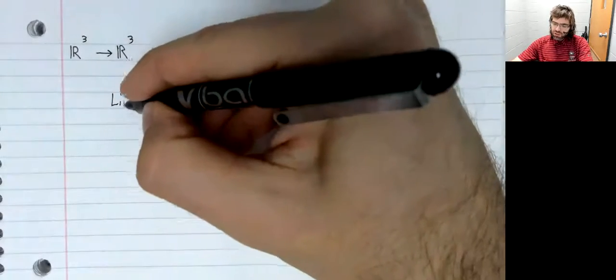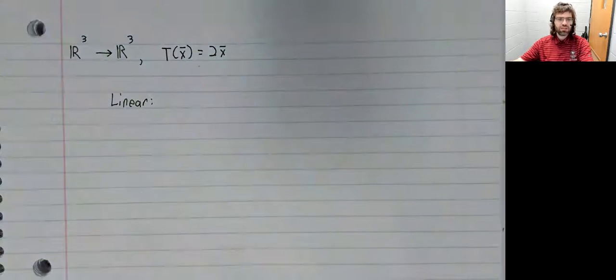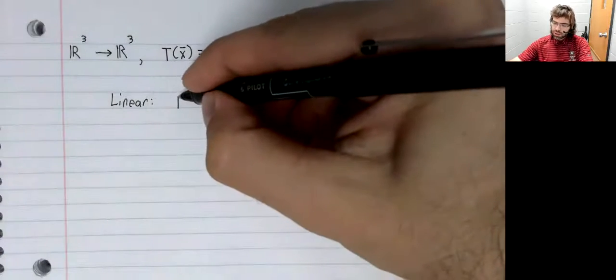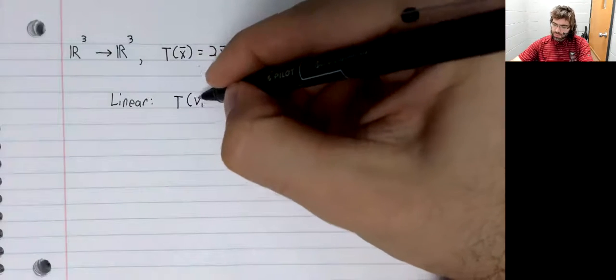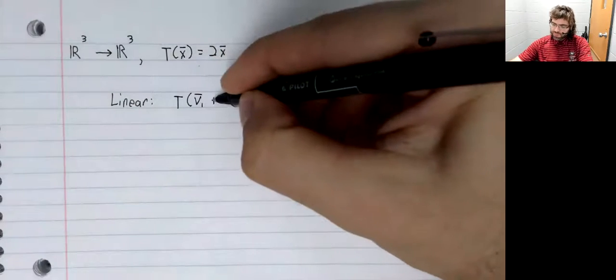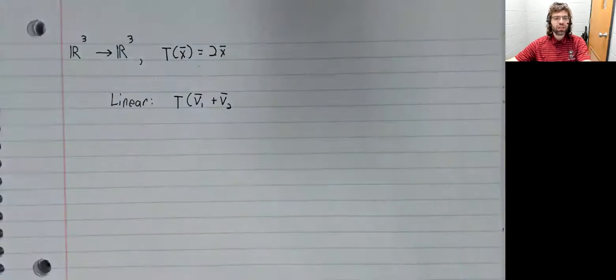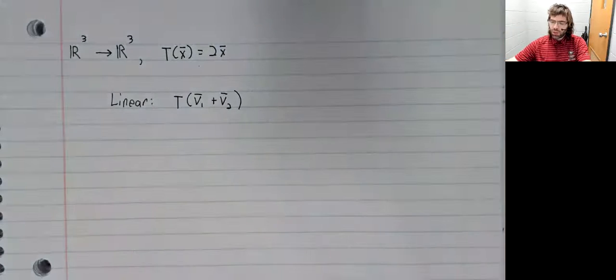And let's verify that this is linear. To be linear, we need two things to happen. Let's check them one by one. T of v1 plus v2.